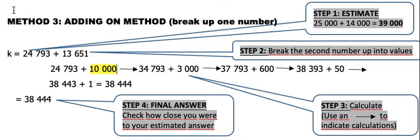The next value we will be adding will be 3,000. So 34,793 plus 3,000 will give me 37,793.